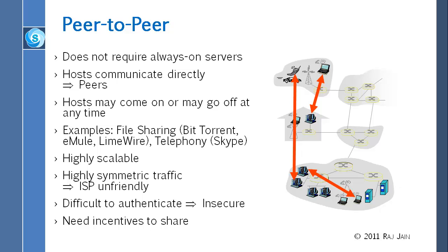File sharing applications like BitTorrent, Emule, and LimeWire are P2P examples. Skype is also P2P — when you are talking to somebody, you might be talking through somebody else's computer. The advantage of P2P is that it is highly scalable. Servers have a limited capacity, so if a server is designed for 1,000 people and you have 2,000, the server is gone. But with P2P there is no limit. P2P also produces highly symmetric traffic but is ISP unfriendly.